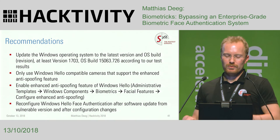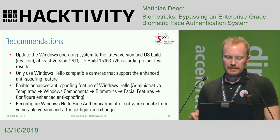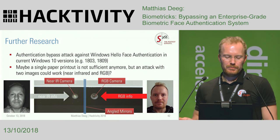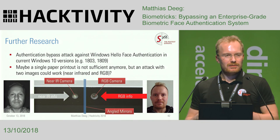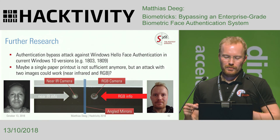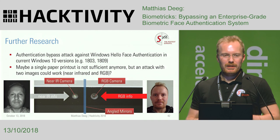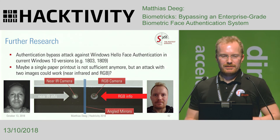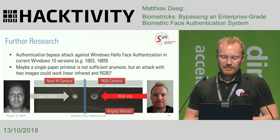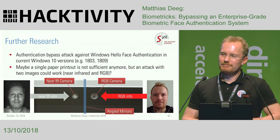The conclusion is that Windows Hello face authentication can be bypassed by rather simple means — a paper printout with a photograph taken by a near IR camera. It depends on the hardware and software configuration. The enhanced anti-spoofing feature is not supported by all Windows Hello compatible cameras. Our recommendations: use newer Windows 10 versions; only use cameras that support enhanced anti-spoofing; enable this feature; and if you enable it after enrollment, re-enroll. For further research, I want to try using two paper printouts with two angled mirrors — one for the IR camera and one for the RGB camera — to potentially bypass even the enhanced anti-spoofing mode.